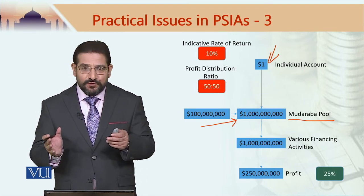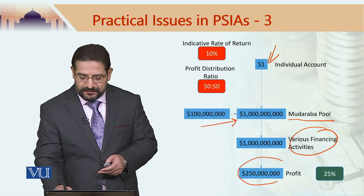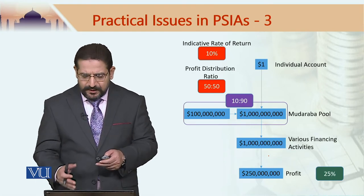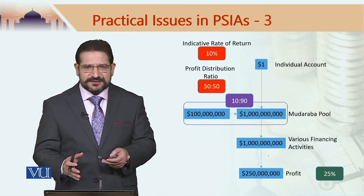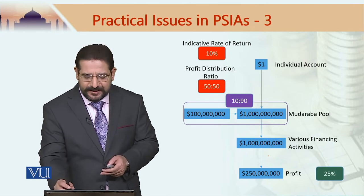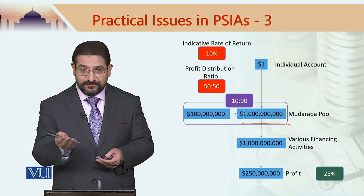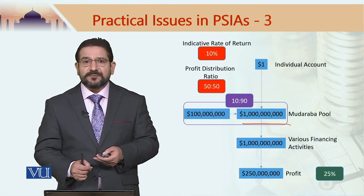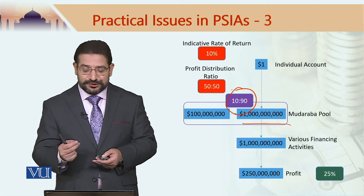This pooled money is then used for various financing activities which generate some profit. This profit goes into the profit equalization reserve and investment risk reserve, as we will look at in just a second. In the Mudarabha pool, 90 percent of the funds come from profit-sharing investment account holders and 10 percent come from the shareholders of the bank — hence this 10-90 ratio is highlighted.